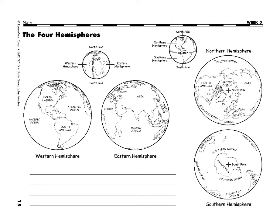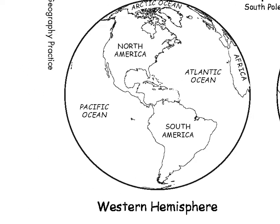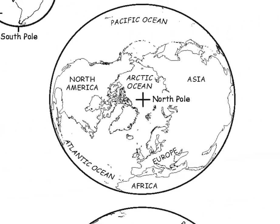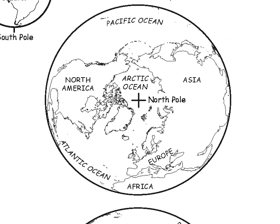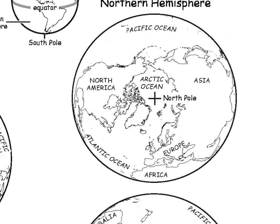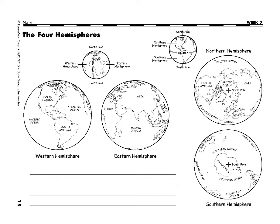When you put these two pairs together, you can pretty much set up a method by which to identify any quadrant within the world. For example, the United States would be in the Northwestern Hemisphere, because we are north of the equator and west of the prime meridian.